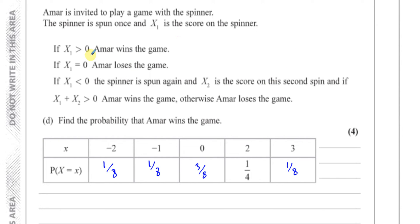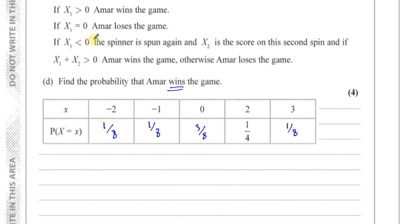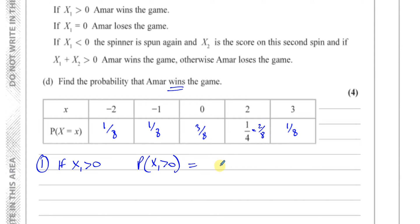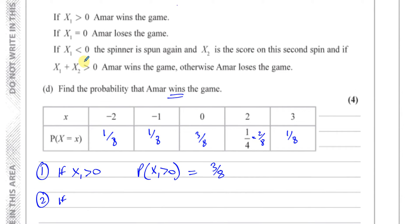We want to find the probability that Amar wins the game. The first way he wins is if X1 is greater than 0. The probability of X1 being greater than 0 is the sum of those two outcomes — that's two eighths plus one eighth, so three eighths. That's one outcome where he wins. The other way he wins is if X1 is less than 0, the spinner is spun again, and X1 plus X2 is greater than 0.